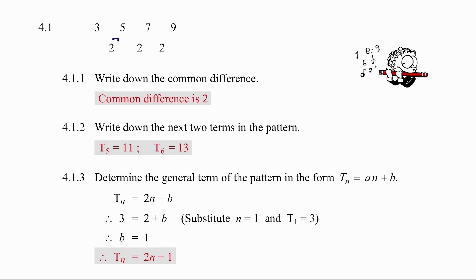Common difference is 2. Generating the next two terms of 11 and 13. And then to create the formula, your coefficient is 2. If you substitute 2n, you need to add 1 in order to give you a first term of 3. Pause the video if you need more time.